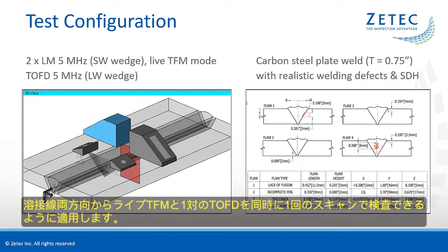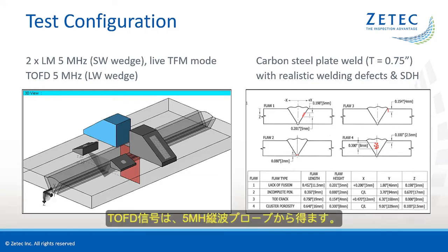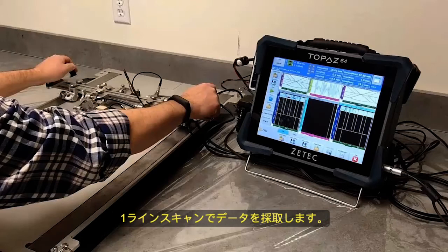The inspection is performed with LIFE TFM from both sides of the weld and a TOFT pair in a single scanning sequence. The LIFE TFM frames are generated from two 5 MHz 64-element linear arrays on shear wave wedges. The TOFT signals are generated by 5 MHz conventional UT probes on L wave wedges. The ZTEK weld crawler is used to carry all the probes for a one-line scanning sequence.